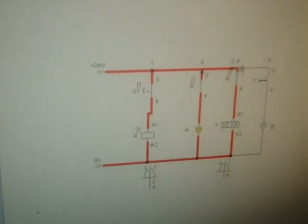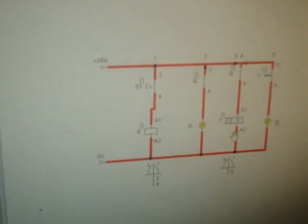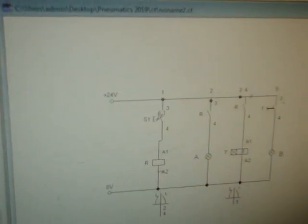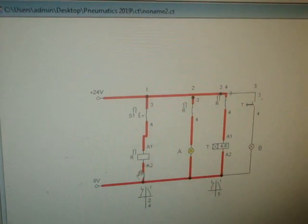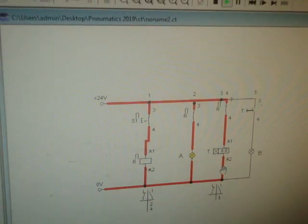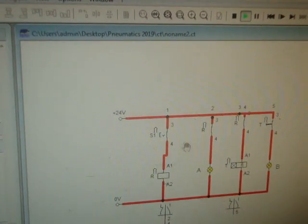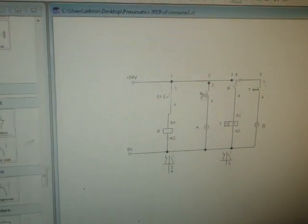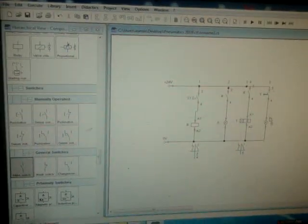First, bulb A will be on. The relay is on. Then the on-delay timer starts — set to 6 seconds. After 6 seconds, bulb B is on. When I turn off S1, both bulbs turn off at the same time, because it is an on-delay timer. Once again: bulb A is on, relay is on, on-delay timer starts, after 6 seconds bulb B is on. When off, both turn off at the same time. This is called on-delay timer.